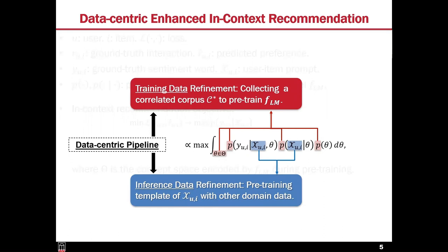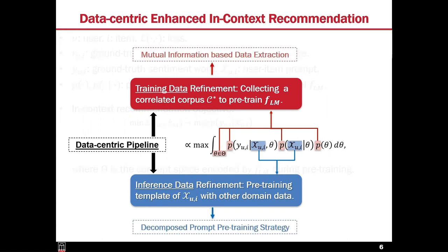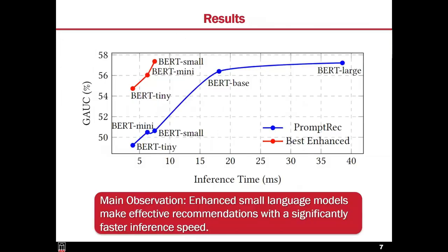In our paper, we propose a data-centric framework to maximize this conditional probability. The first component is pre-training language models on a correlated corpus. The second is pre-training prompt templates from other recommendation datasets. Here, the correlated corpus refers to the training data, while the template of the prompt is a kind of inference data. In particular, we propose a data extraction method based on mutual information for training data refinement. We also propose a prompt pre-training strategy to ensure the transferability of pre-trained templates from other recommendation domains. We evaluate our methods on very small language models like BERT-Tiny and BERT-Mini, which only have a few million parameters.